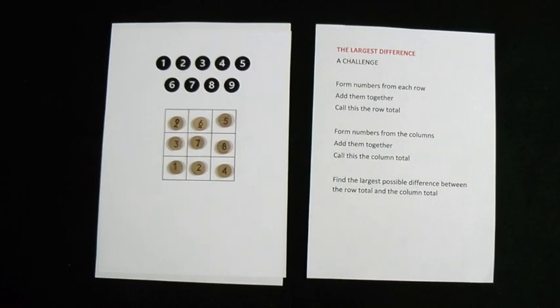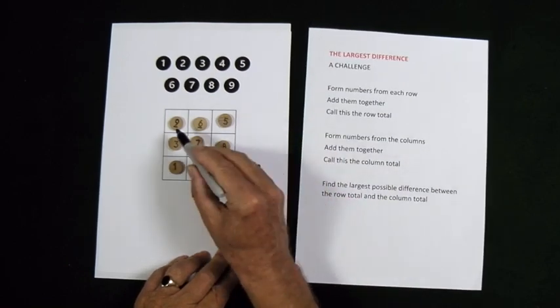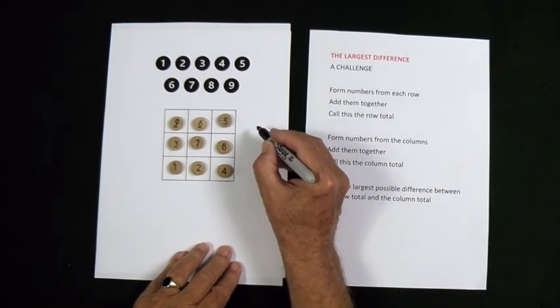I'll put my nine digits on the square. I'm using those digits to form numbers. Firstly, I'm going to form the numbers on each row.